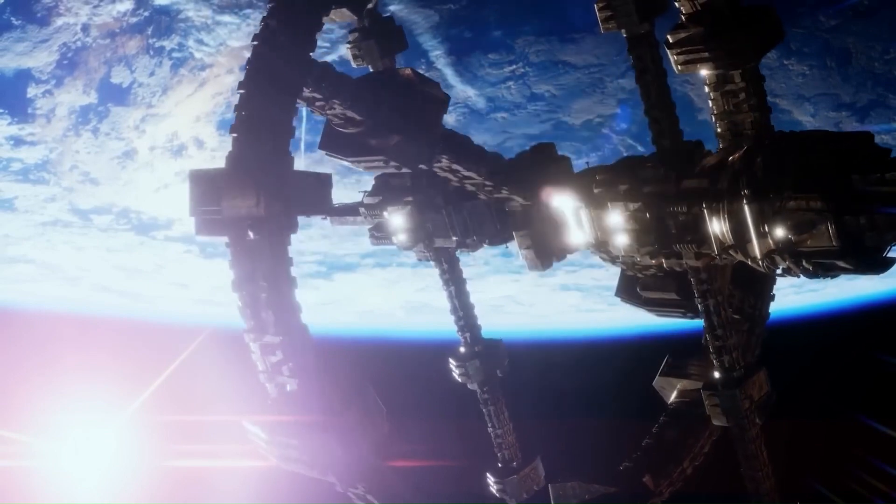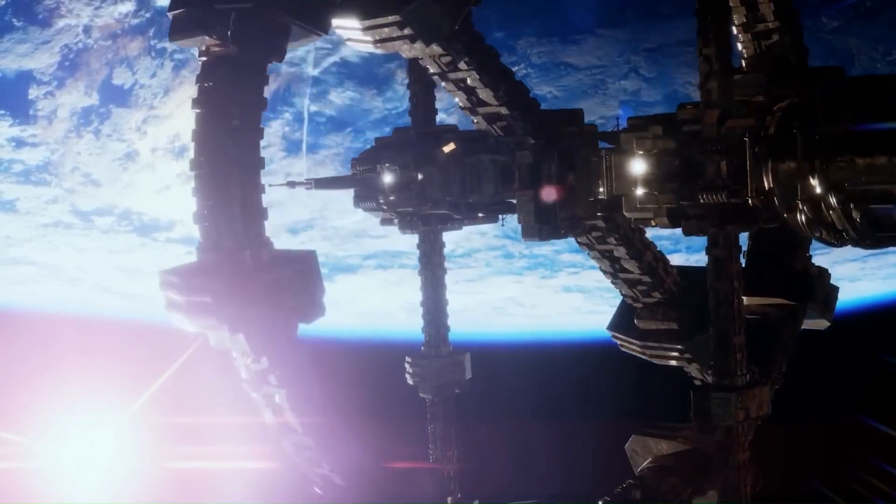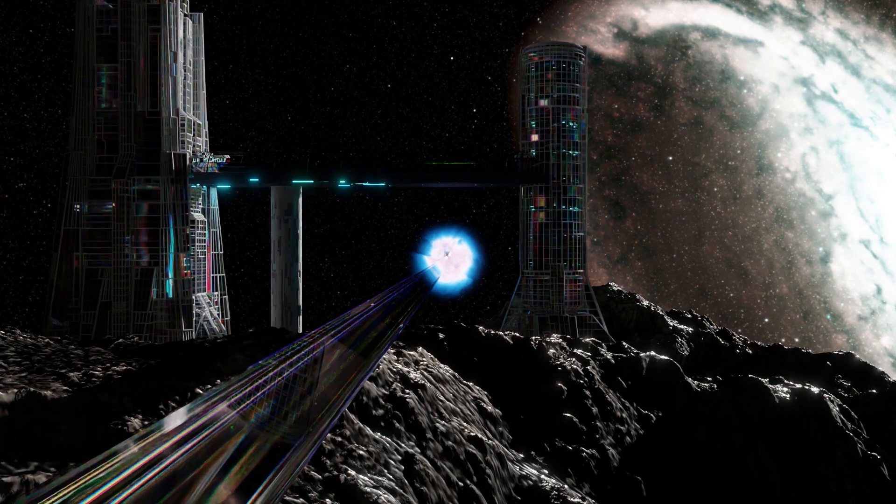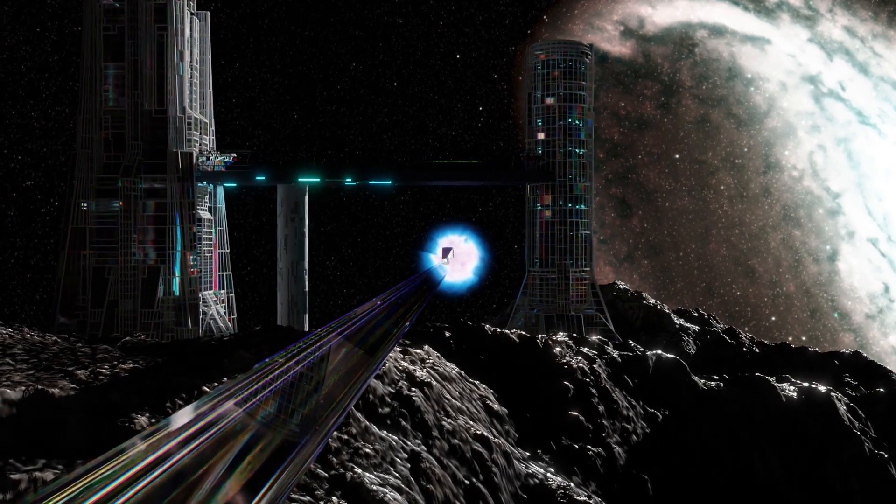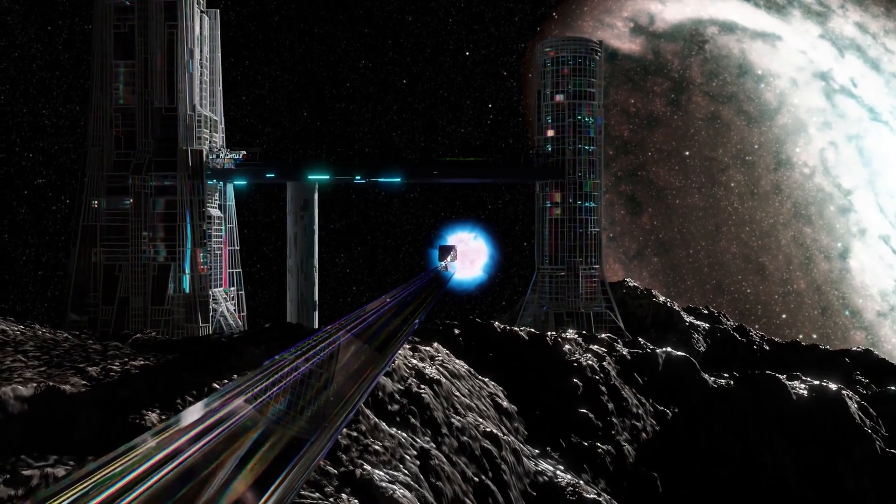Astronomers have been closely monitoring Betelgeuse with both ground-based and space-based telescopes. Observatories equipped to detect neutrinos and gravitational waves are on high alert, as these elusive particles often precede the light from a supernova.